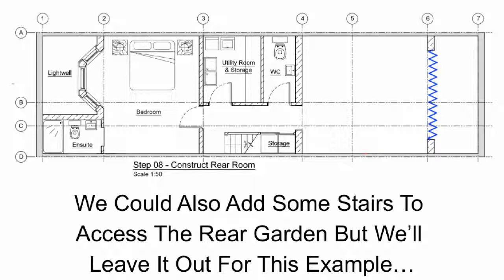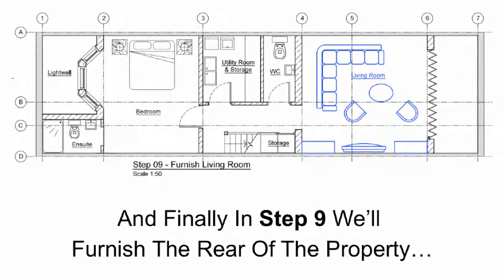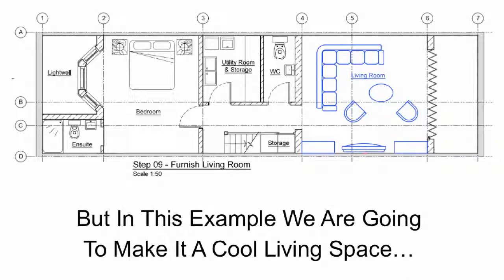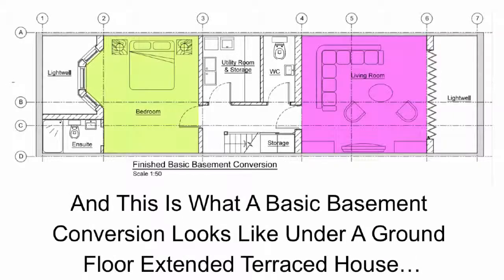We could also add some stairs to access the rear garden, but we leave that out for this example. In step 9 we furnish the rear of the property — it could be a movie room, TV room, gym, office, study, playroom, whatever you want. In this example we are going to make it a cool living space, and this is what a basic basement conversion looks like under a ground floor extended terraced house.